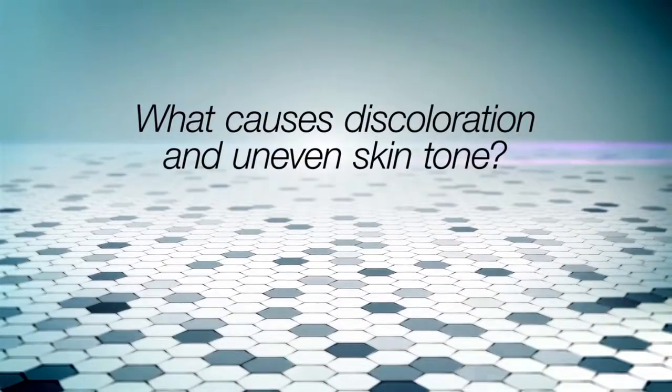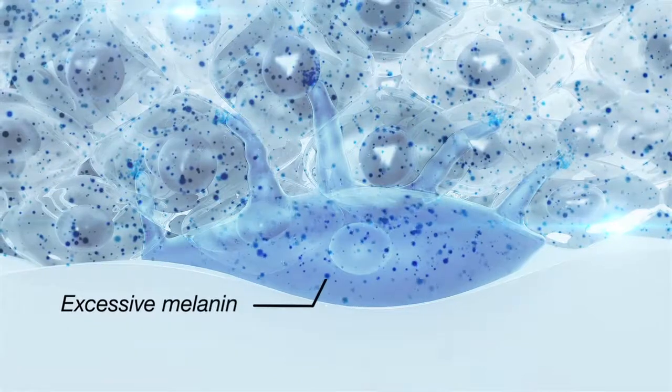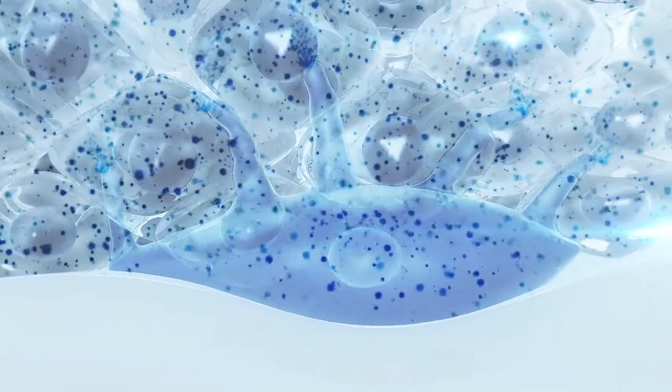What causes discoloration and uneven skin tone? They're most commonly the result of excessive melanin in the skin caused by environmental stress and the natural aging process.